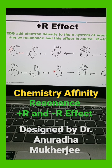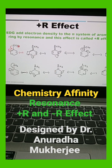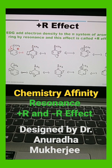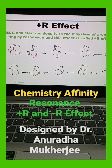There are two types of resonance effect: plus R effect and minus R effect. Plus R effect is shown by electron donating groups — it adds electron density to the pi system of the aromatic ring by resonance. Here we have taken methoxy and NH2. We can see the oxygen lone pair or nitrogen lone pair coming inside the benzene ring by resonance effect, and due to that the aromatic system becomes more electron rich. That is the effect of plus R effect.